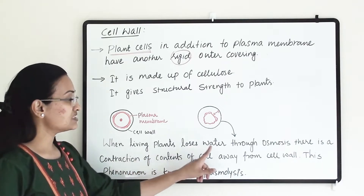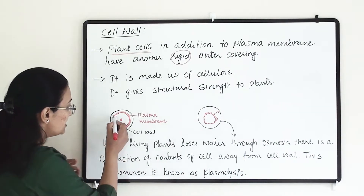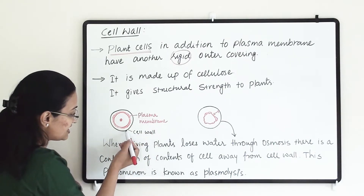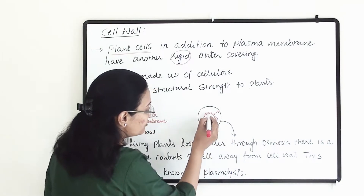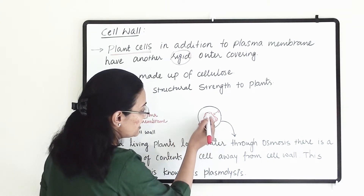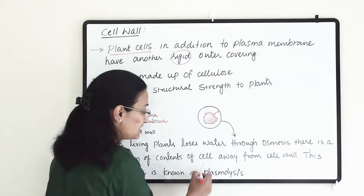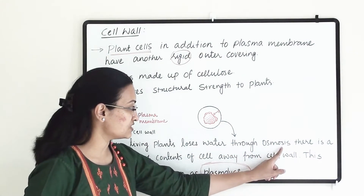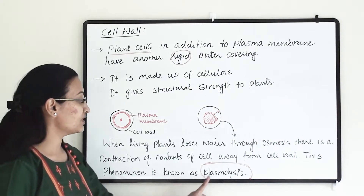When a living plant loses its water through osmosis, there is a contraction of the contents of the cell. The cell content is inside the plasma membrane, and outside is the cell wall. Because of osmosis, when a lot of water goes out, there will be a shrinkage of the cell content and it will get separated from the cell wall. This contraction of cell content away from the cell wall is known as plasmolysis.